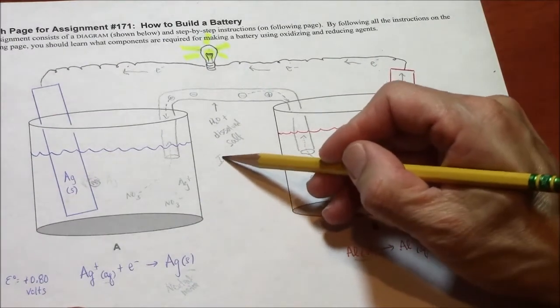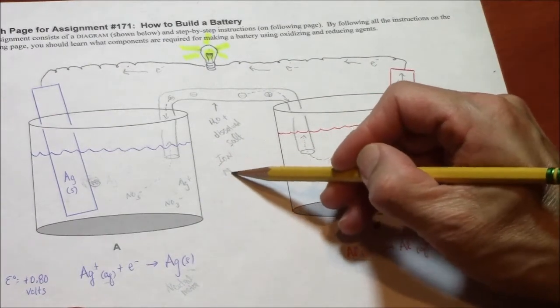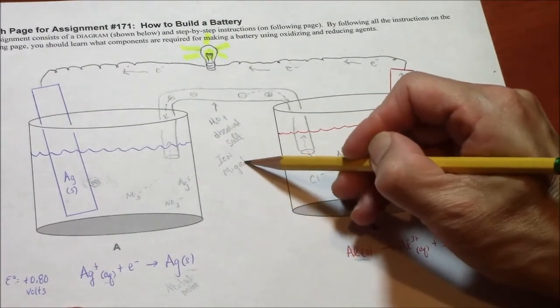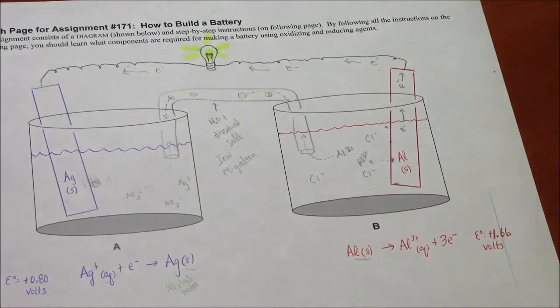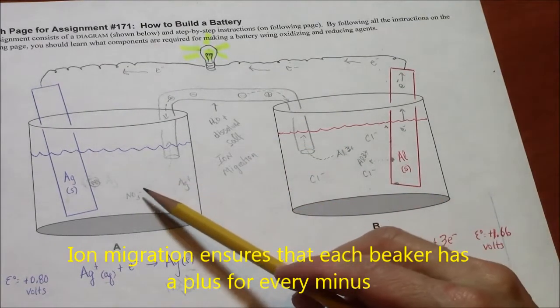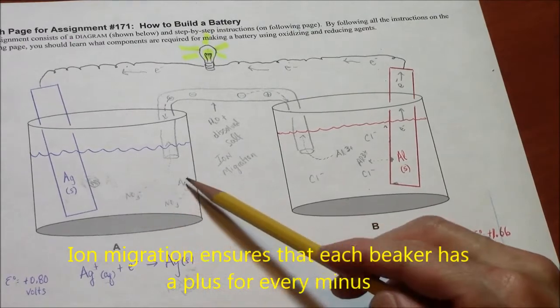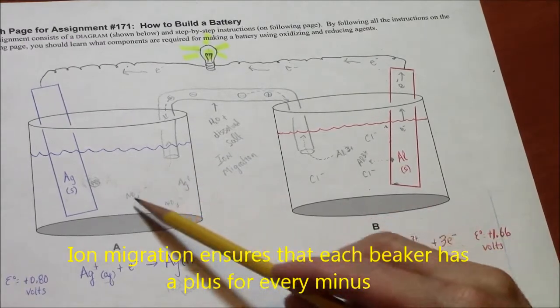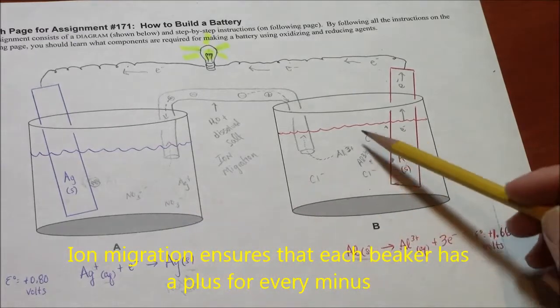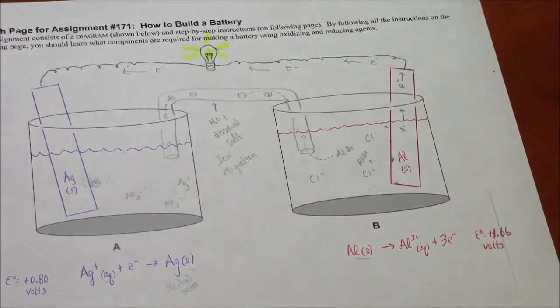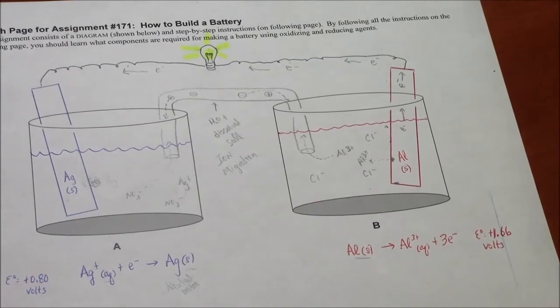So you have this ion migration through the salt bridge, which allows you to even out the charges, so that there will be an equal number of positives and negatives on the left-hand side, an equal number of positives and negatives on the right-hand side. This is essential for the operation of the battery.